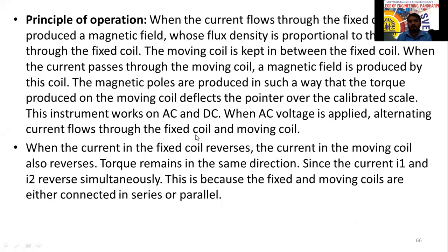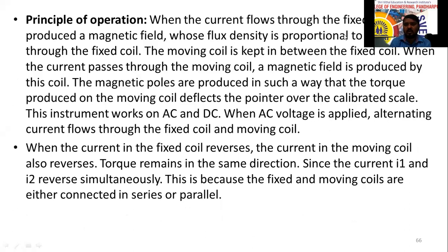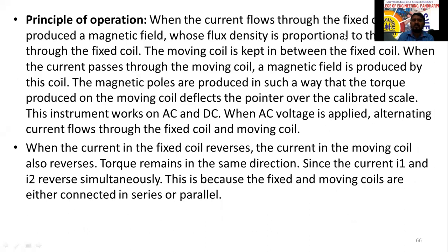When current flows through the fixed coil, it produces a magnetic field whose flux density is proportional to that current. The moving coil is placed between the two fixed half-coils, and the same current passes through it. The magnetic poles are produced such that the torque deflects the pointer.